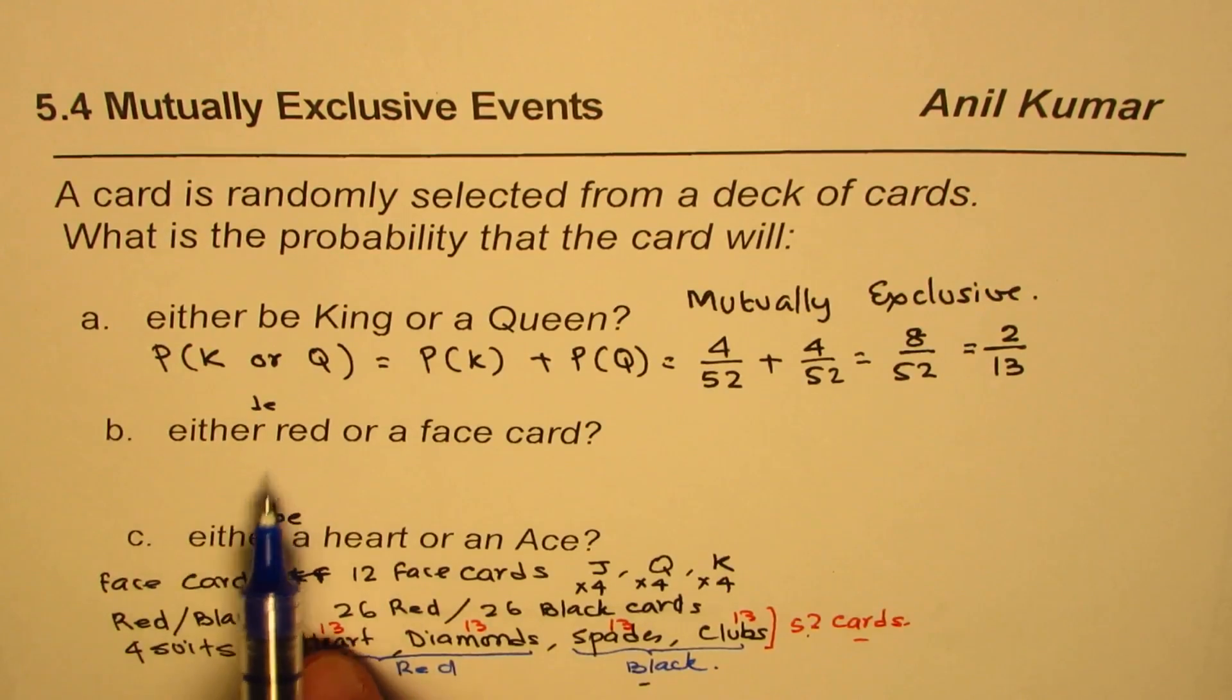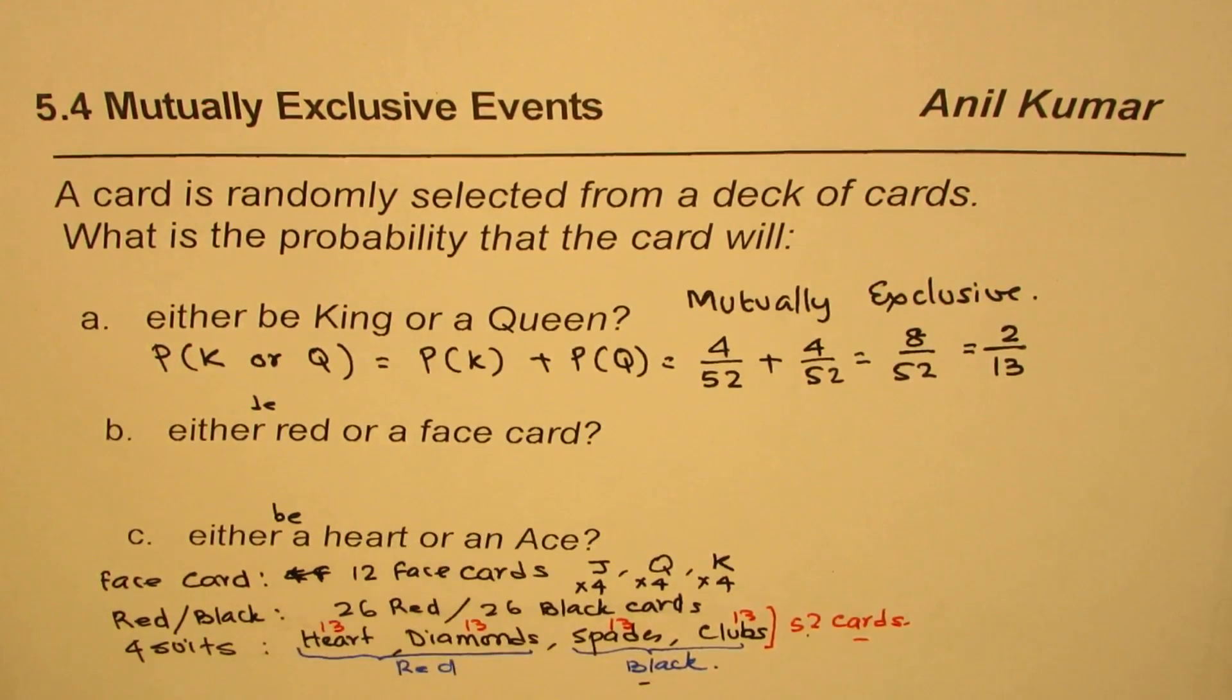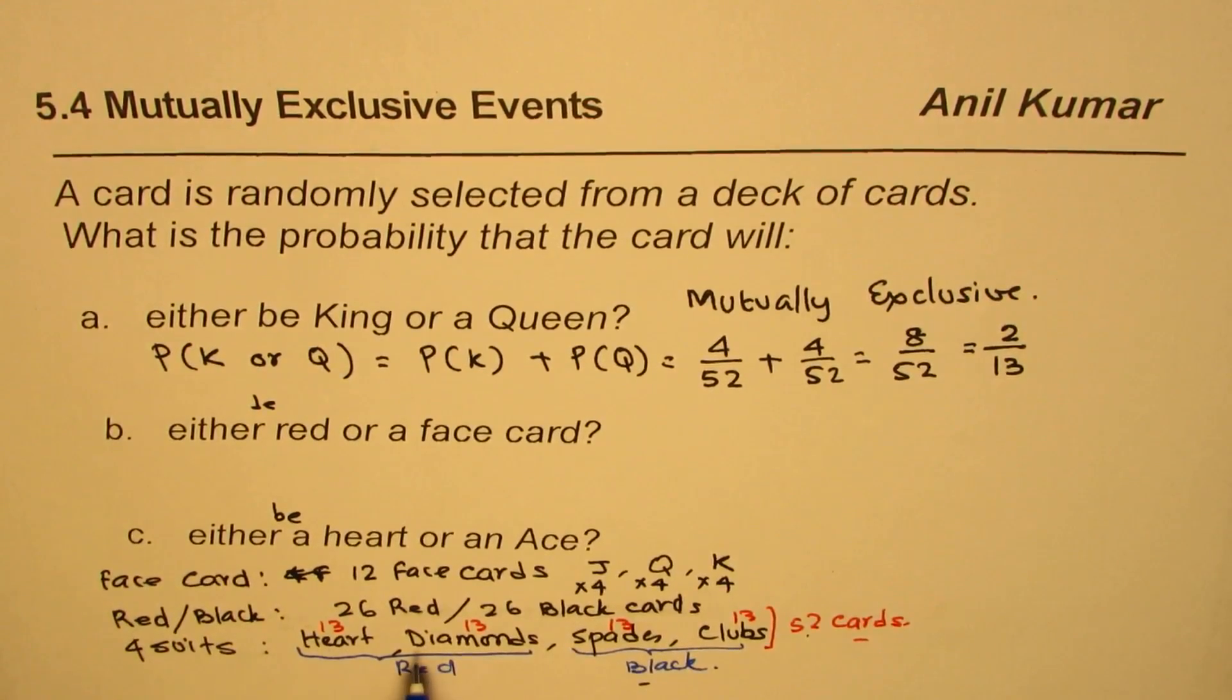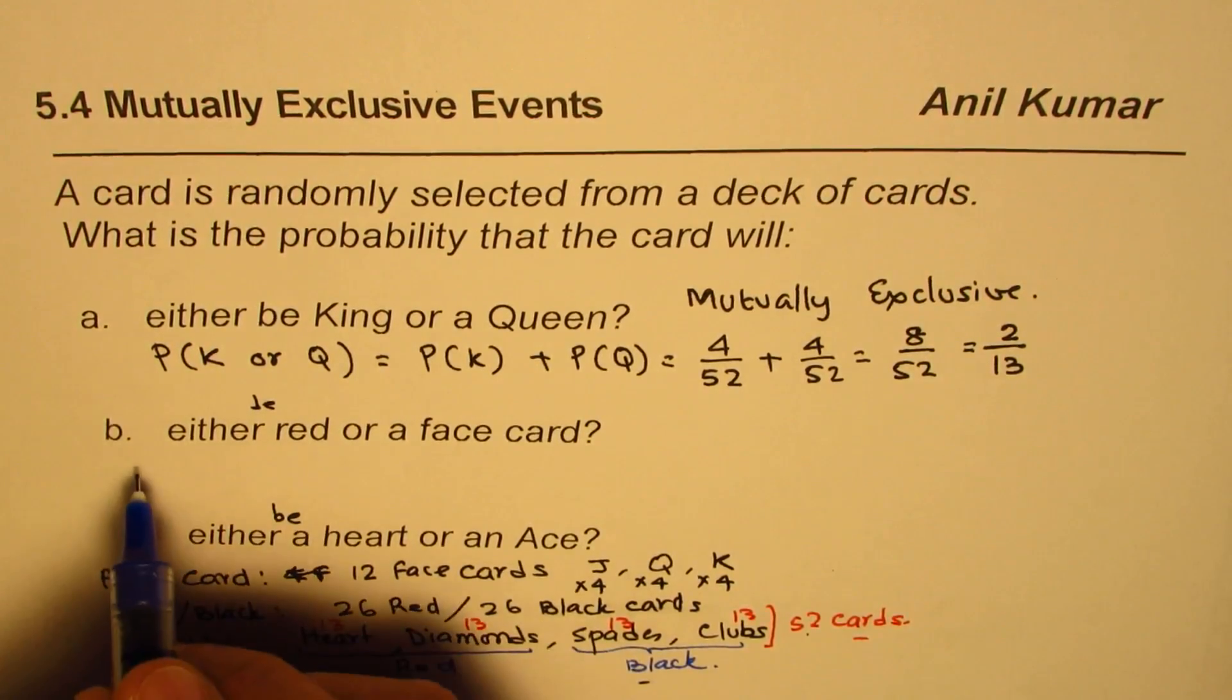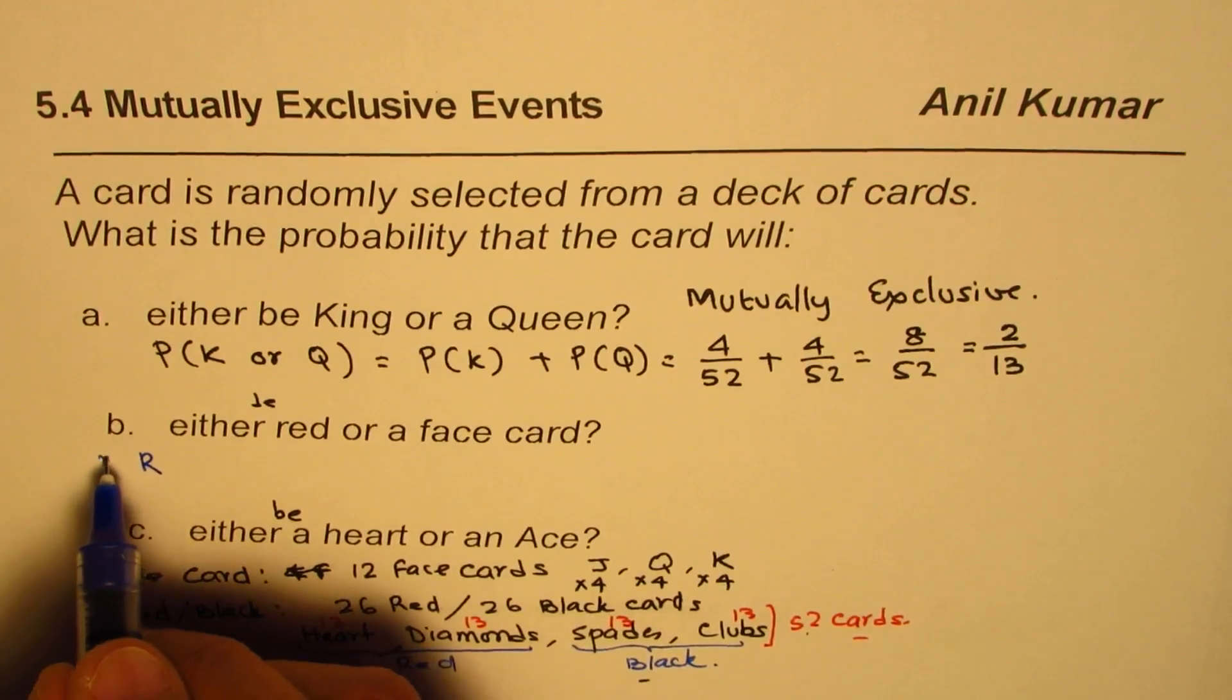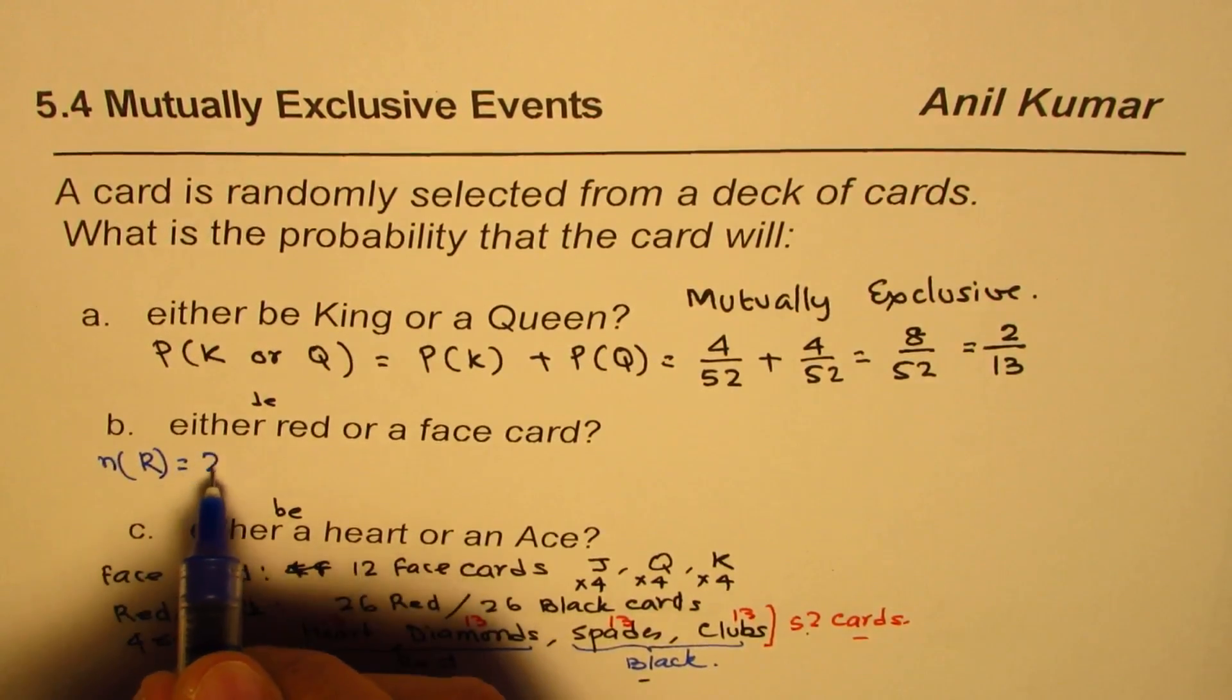Part B: either red or a face card. We have 26 red cards. When we talk about red cards, the number of red cards is equal to 26.